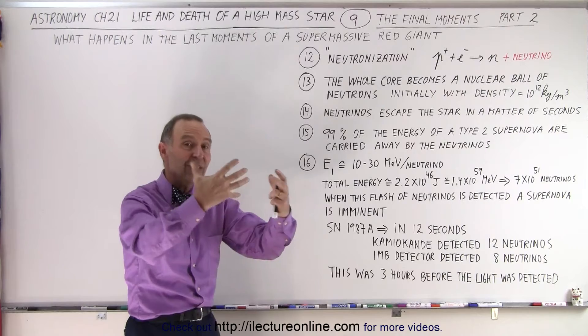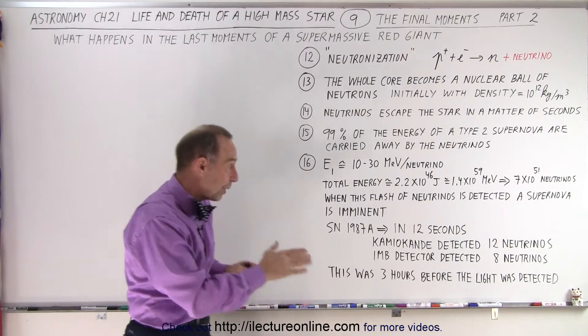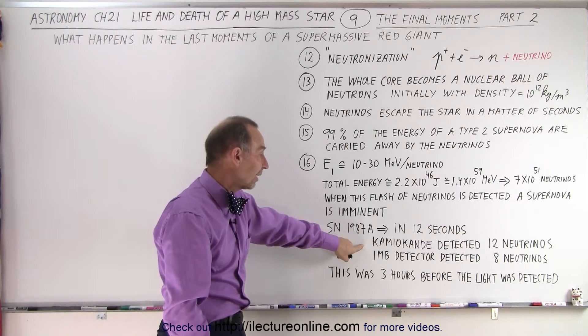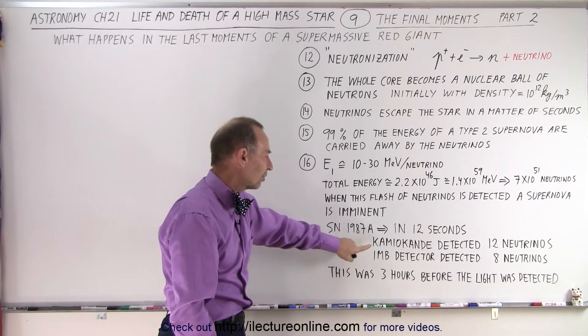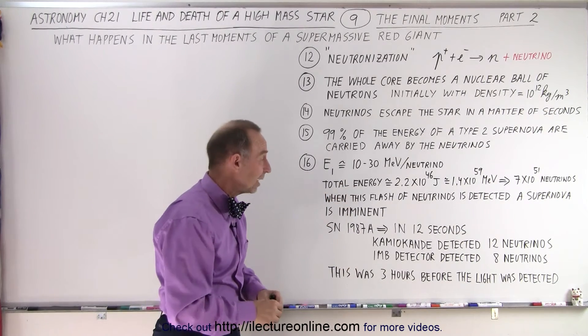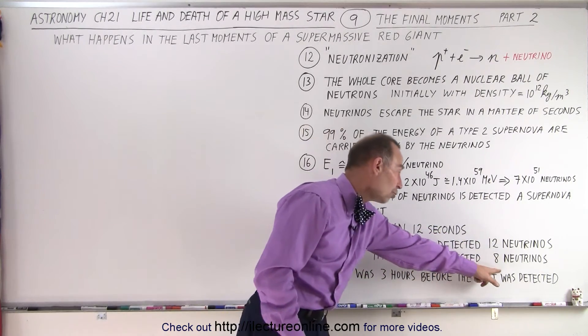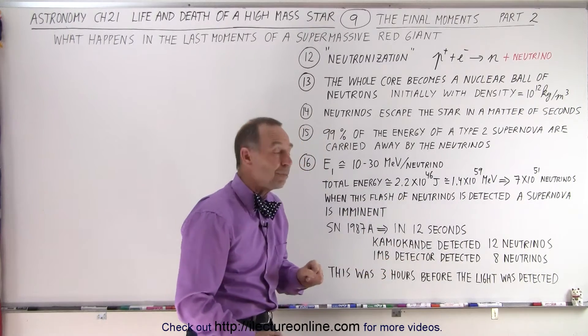And we saw a flash of neutrinos over a period of about 12 seconds in both the Kamiokande detector and the IMB detector. The Kamiokande is a big detector in Japan. 12 neutrinos were detected in the Kamiokande and 8 neutrinos were detected in the IMB.